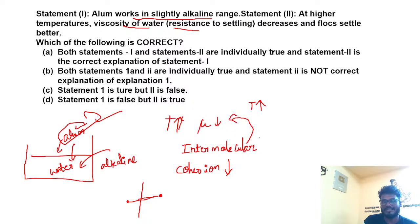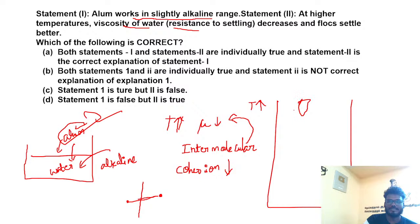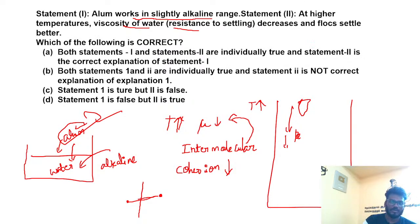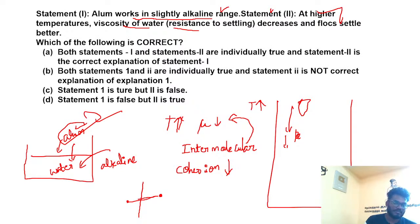If viscosity decreases, resistance decreases. So the flocks can settle easily. Once the resistance or viscosity decreases, flocks can settle easily — that is statement 2. Both statement 1 and 2 are correct, but statement 2 is not the correct explanation of statement 1.